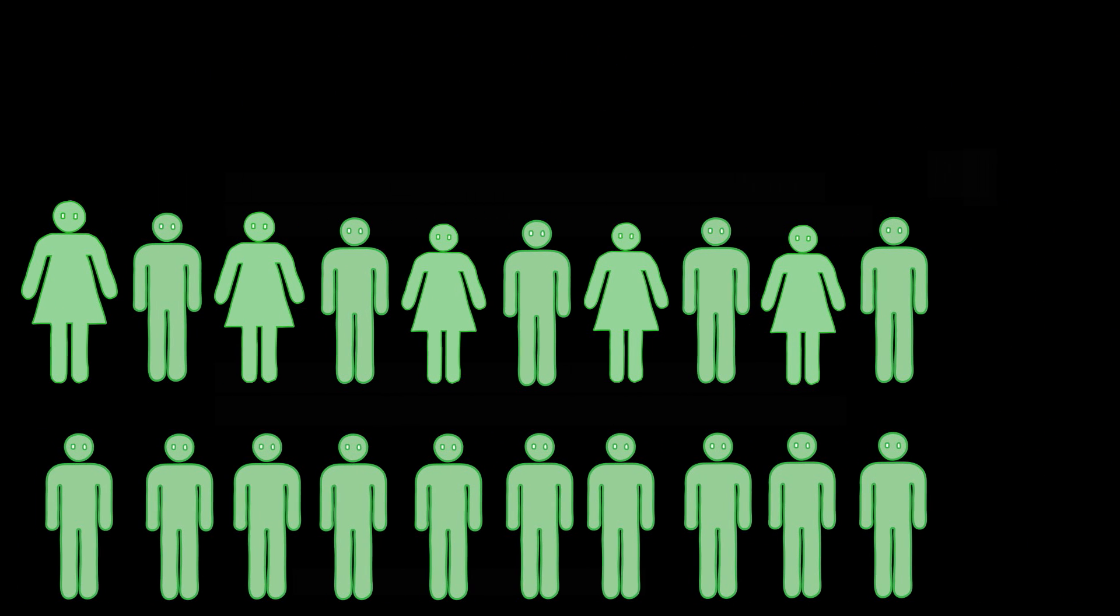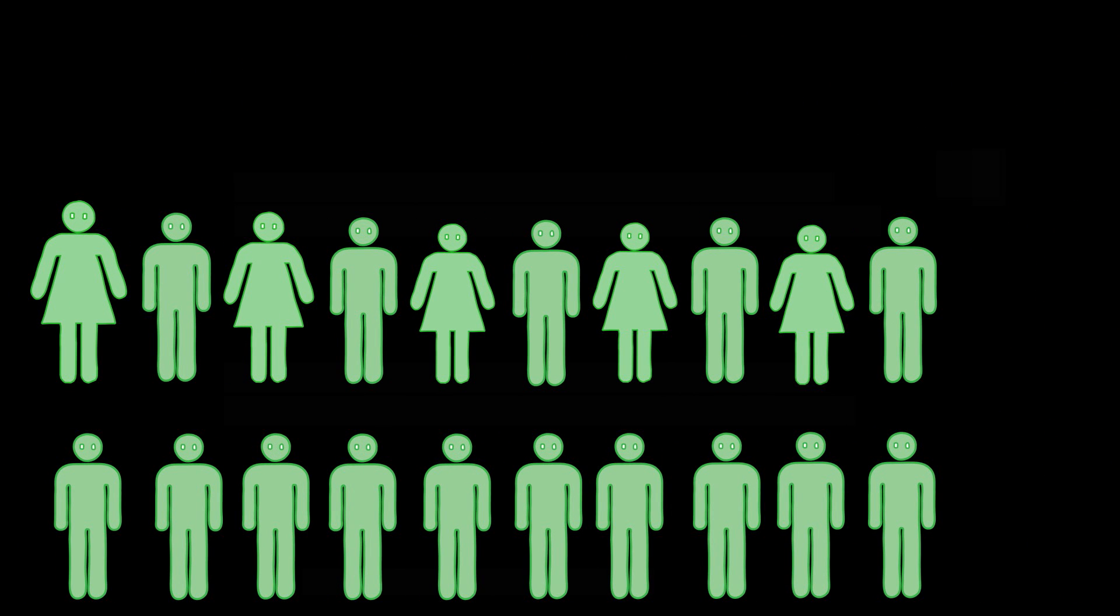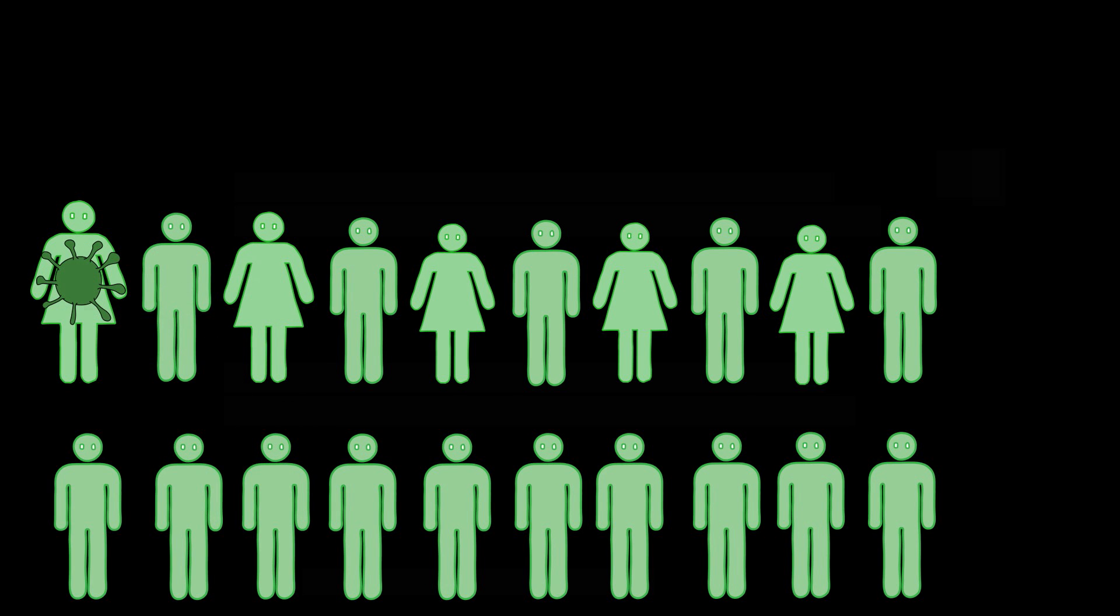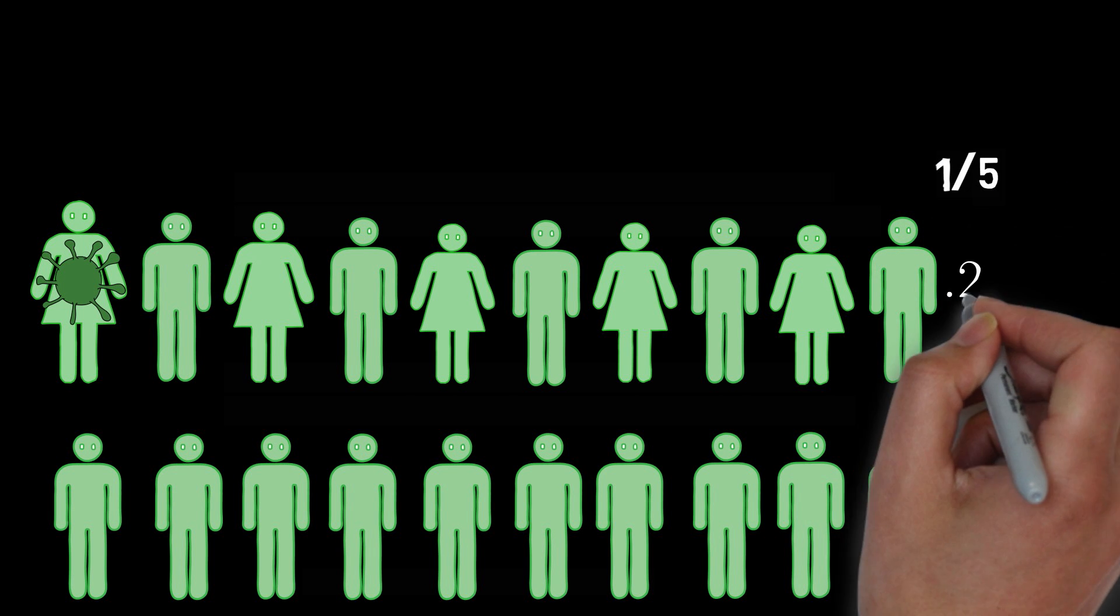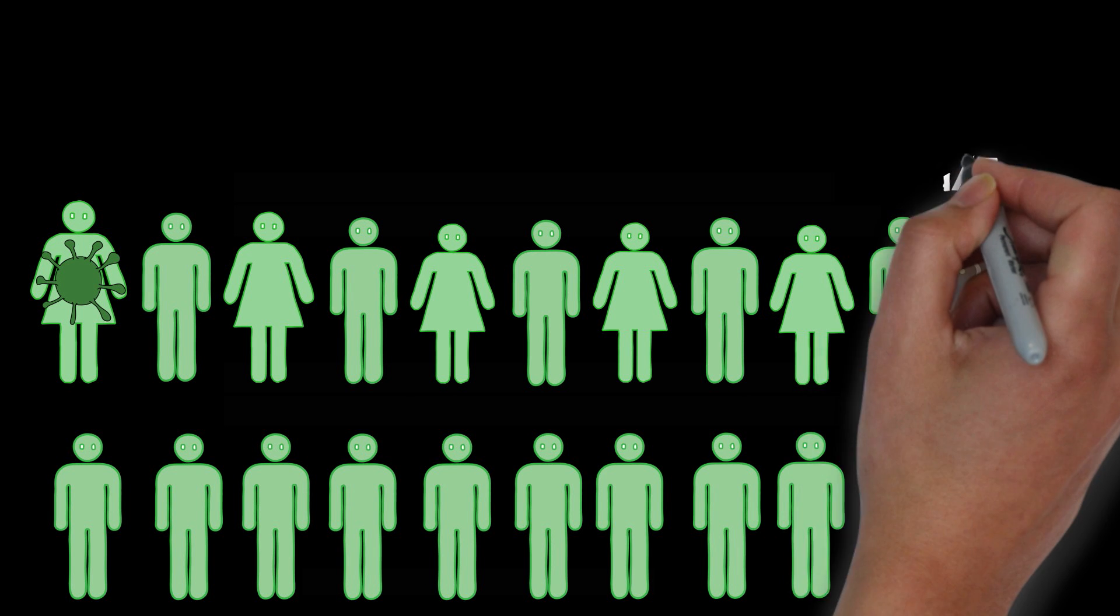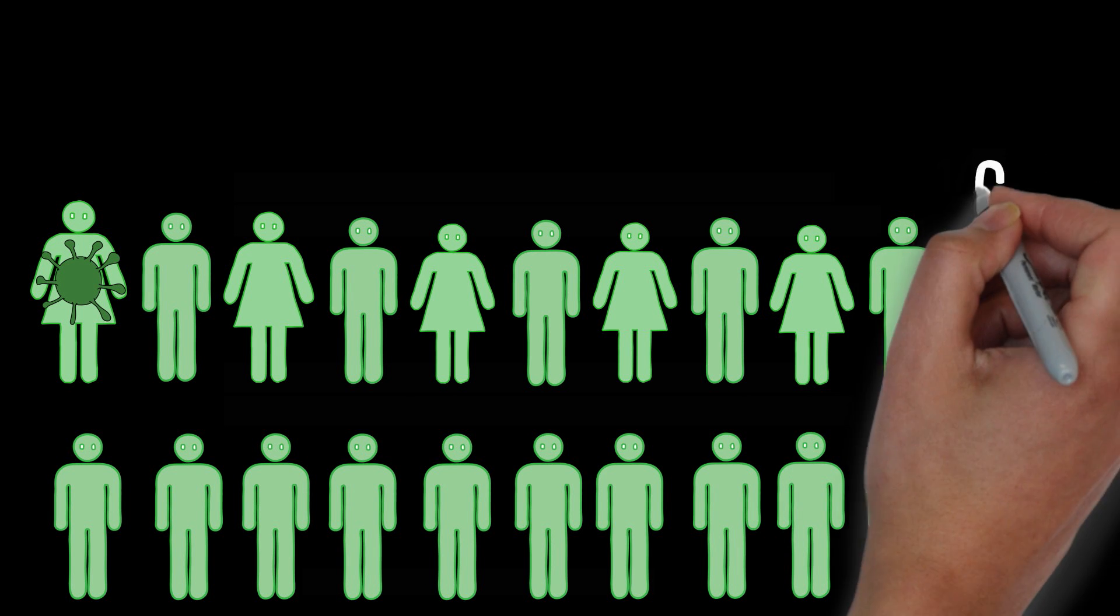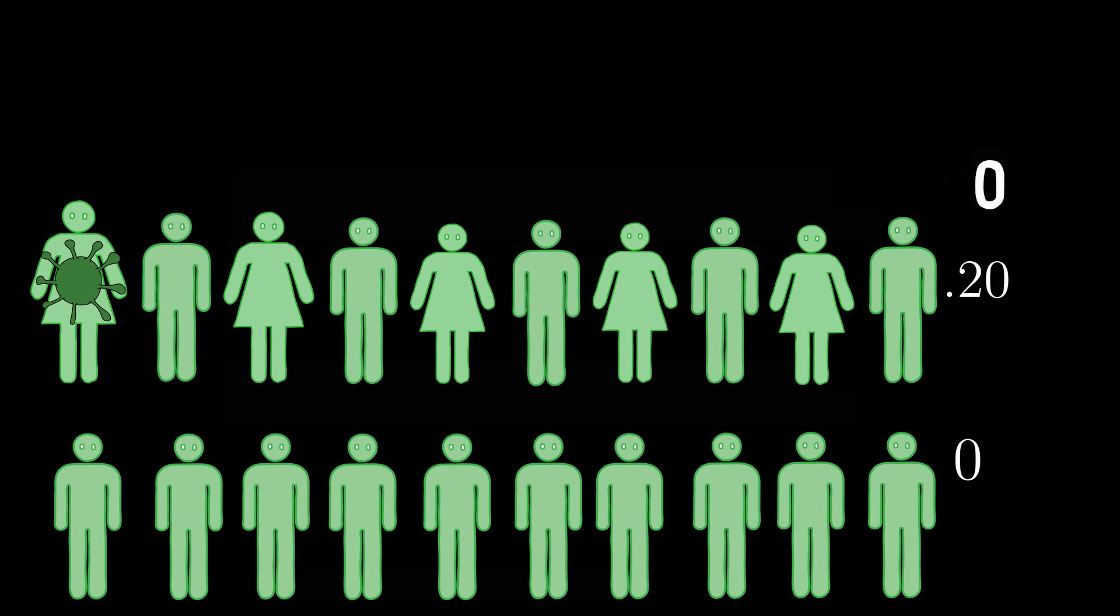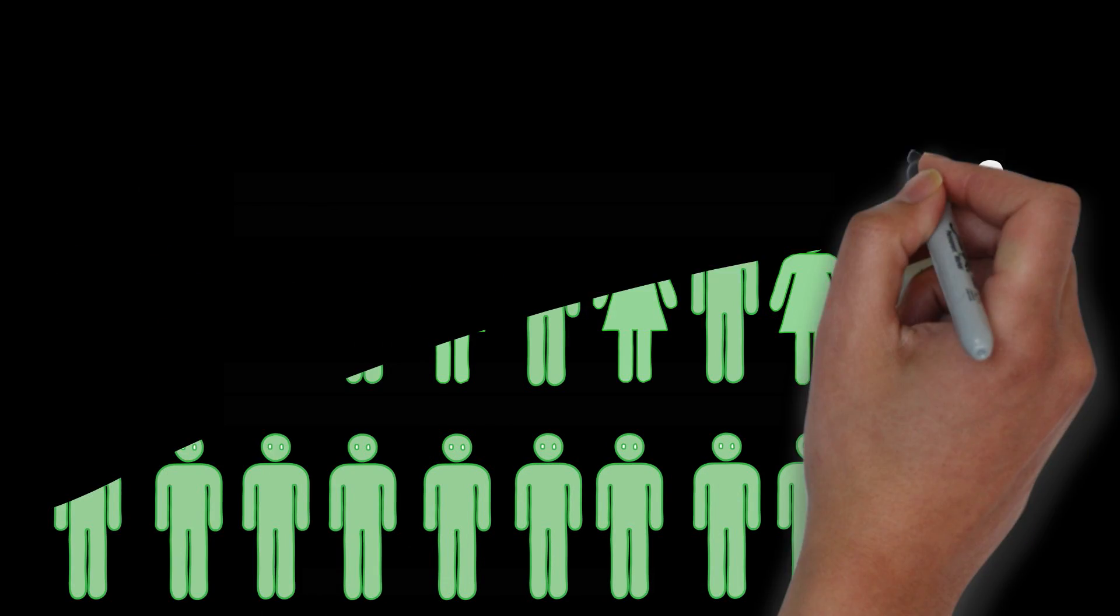Suppose now that there are 5 girls and 15 boys in the class. Now, you don't know whether the class's flu patient is a boy or a girl, but if you were to find out that the patient was a girl, your probability that Sally has the flu would go up to 1 in 5, or 20%, or .2. On the other hand, if you were to find out that the patient was a boy, your probability that Sally has the flu would go down to 0. Because these things are still iffy, remember, you don't yet know whether the flu patient is a boy or a girl.